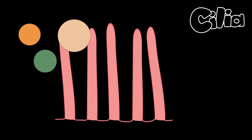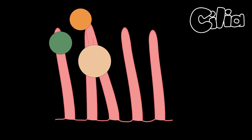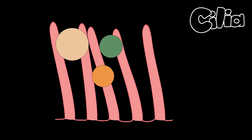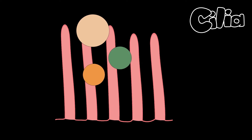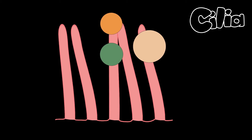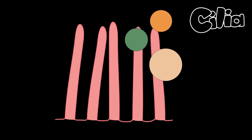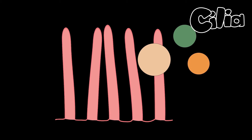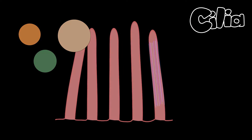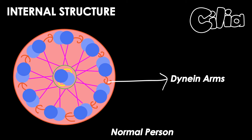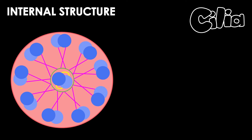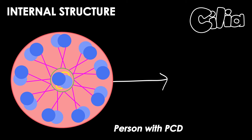The disorder we are covering is based around the motion of cilia. Cilia are tiny hair-like structures found in various parts of the human body. A unique rotary motion called ciliary beating allows these tiny hair-like structures to move particles along the surface. Within each cilium is a set of doublet microtubules. In a person with normal ciliary function,